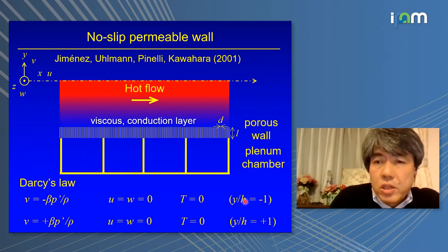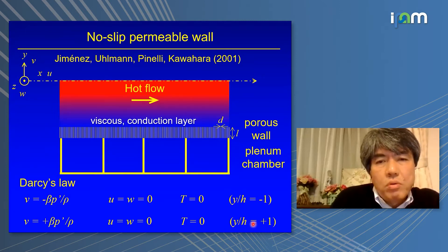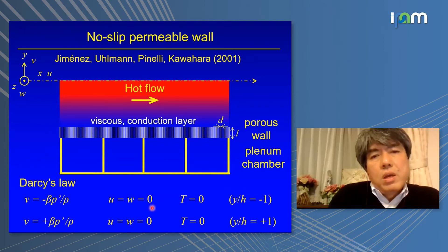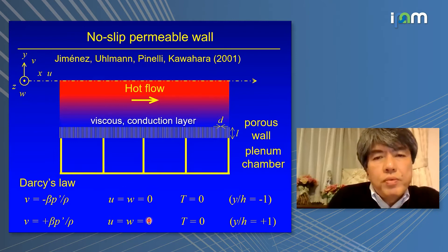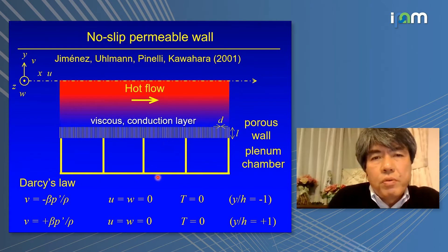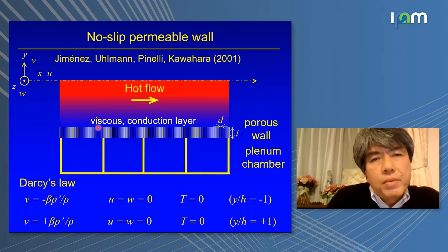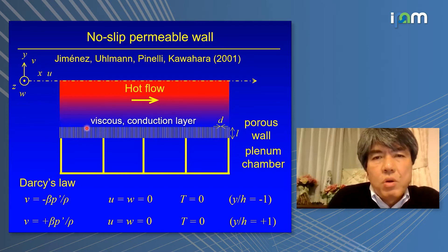These are the boundary conditions at the lower and upper walls. Please note that in our boundary condition, we impose no-slip and isothermal conditions on the permeable wall. Therefore, even in the permeable case, we still have viscous and conduction layers on the wall.